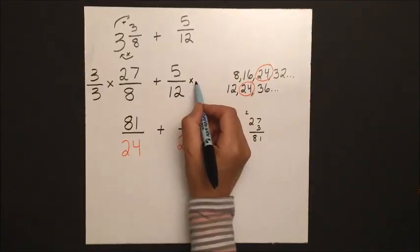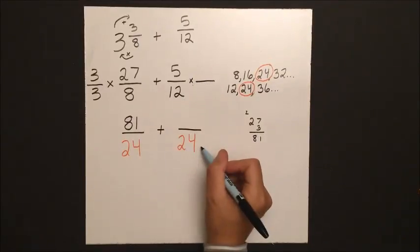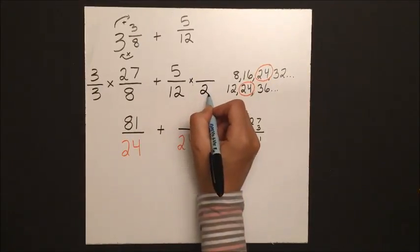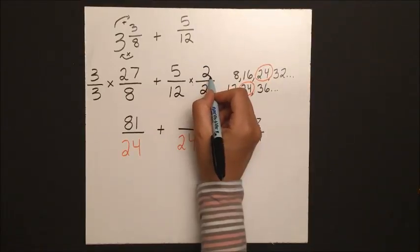Our second problem is how do we get from 12 to 24? We multiply by 2, and if we do that to the numerator, we get 10.